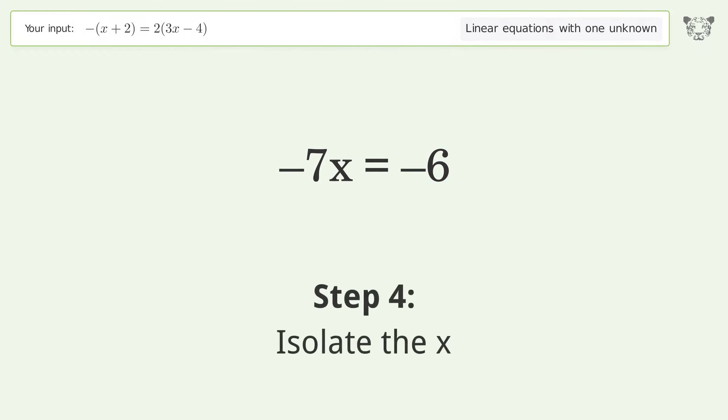Isolate the x. Divide both sides by negative 7. Cancel out the negatives.